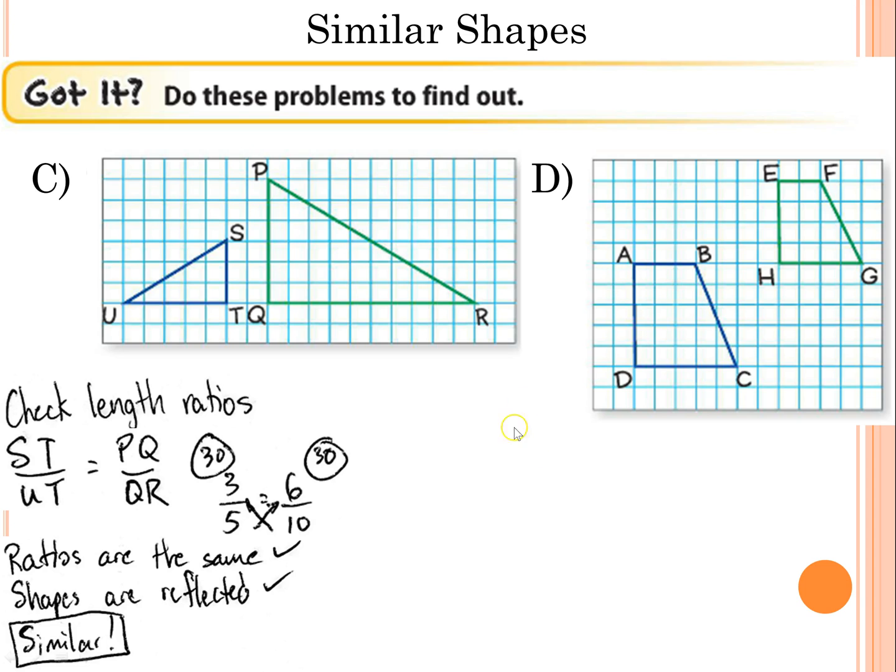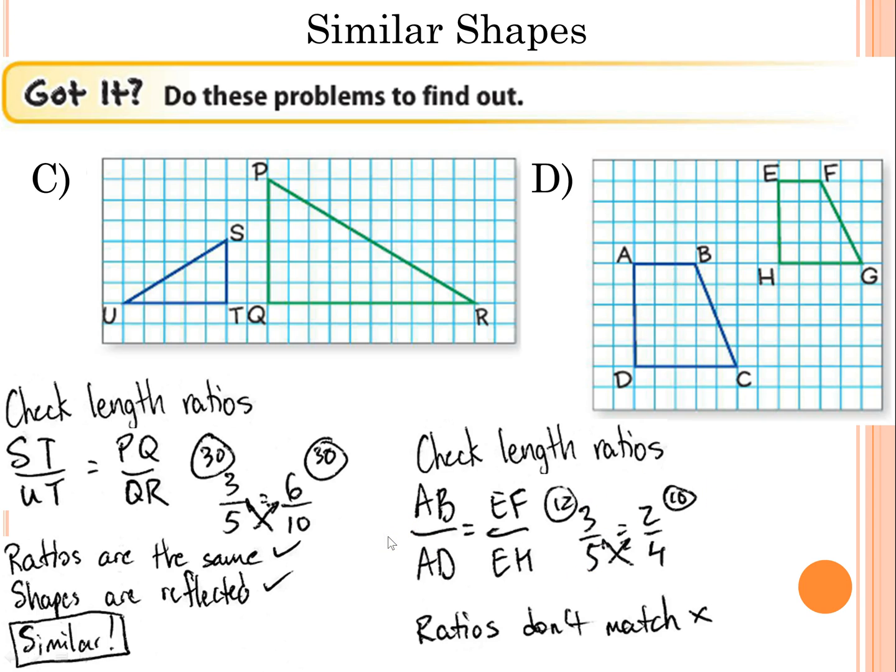Go ahead and pause the video and use the same thing. Check to see if the length ratios are the same for D. I would use AB and AD and the corresponding sides for the smaller green quadrilateral. Go ahead and pause the video. And we're back. So let's check the length ratios, I have AB and AD and EF and EH. I count those up and I multiply, and numbers are not the same. So this was not similar, and the ratios don't match, so it doesn't matter how they were transformed to get from one to the other. Not similar.